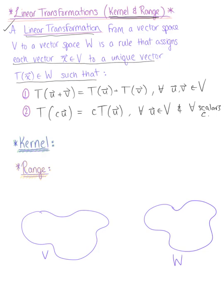We recall this definition again from our last section. The two new terms to introduce here are the kernel and the range. The kernel relates to the null space, and we define it as the set of all vectors U such that T(U) equals the zero vector.